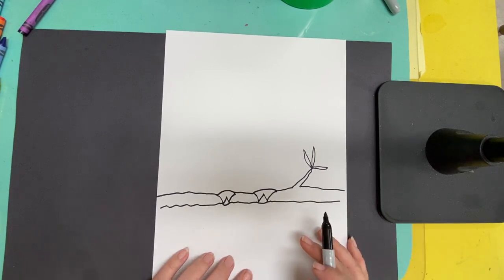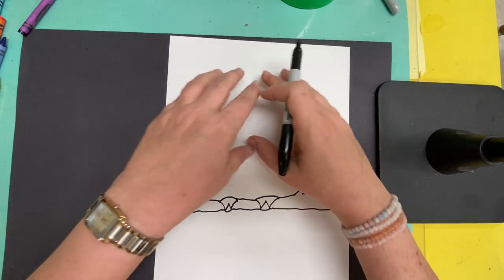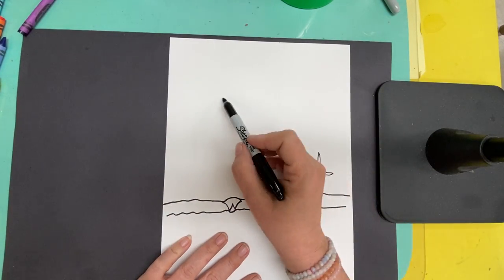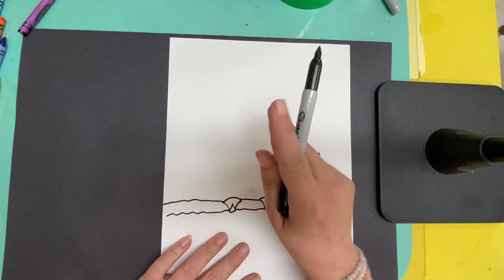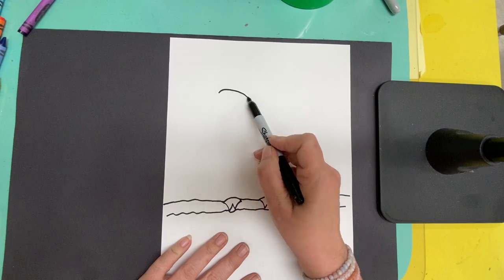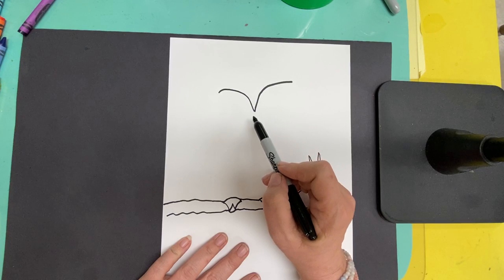The next thing we're going to do is we're going to come up to the top part and we're going to start doing his face. We're going to do a face that looks almost like this foot did, but only one, like a V. And so it's going to come in like a point and then back out.